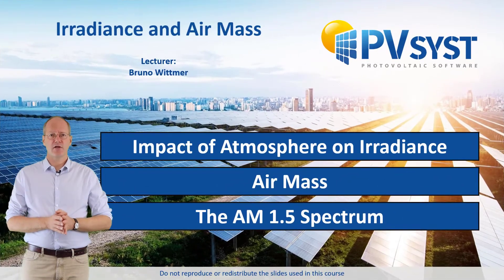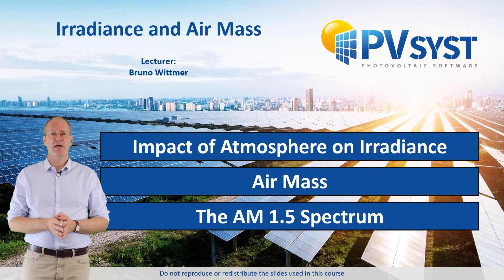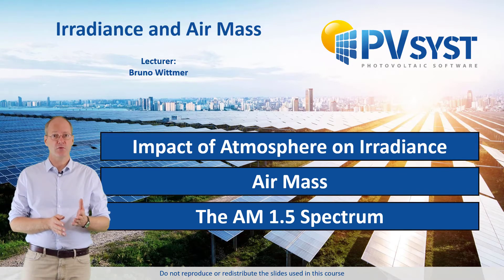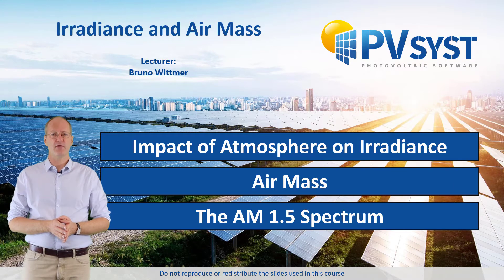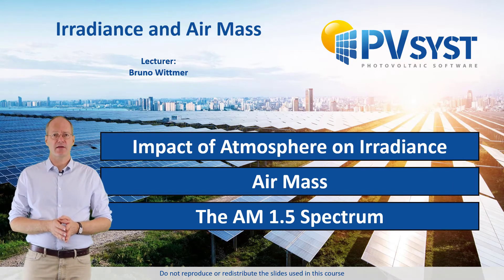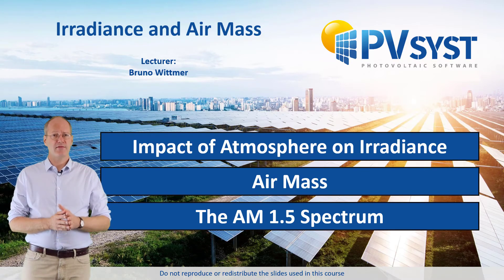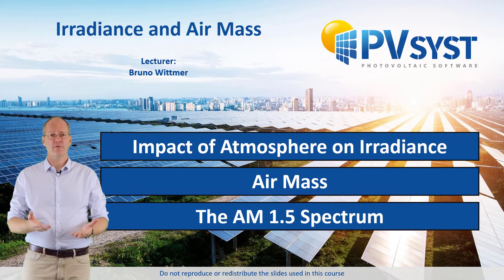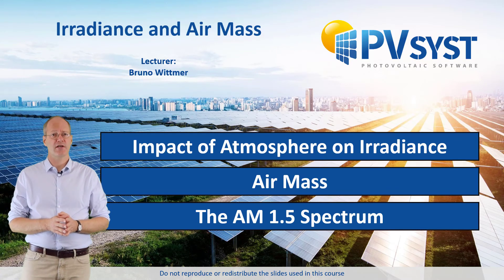Here we discussed the concept of irradiance, showed how the atmosphere changes the spectrum, and discussed the concept of air mass, which is used to quantify that change. Finally, we showed the AM 1.5 solar spectrum, which is used as a standard for the characterization of photovoltaic cells and modules. With irradiance and spectrum in mind, we can now discuss how to convert this light into electricity using photovoltaics.